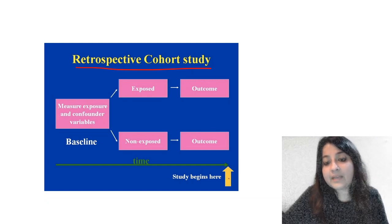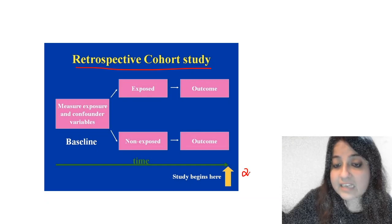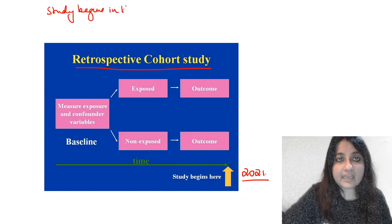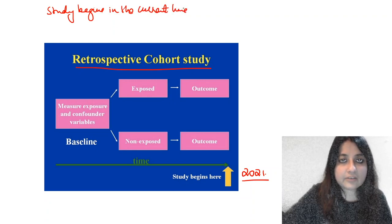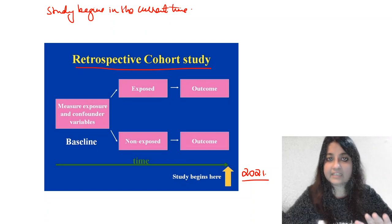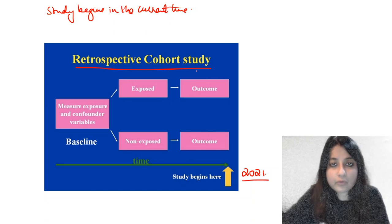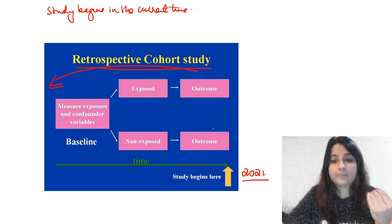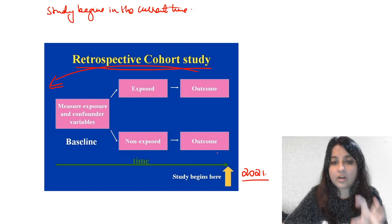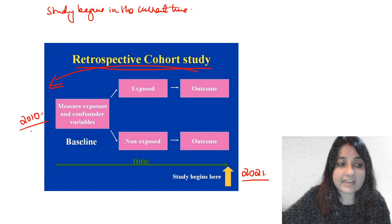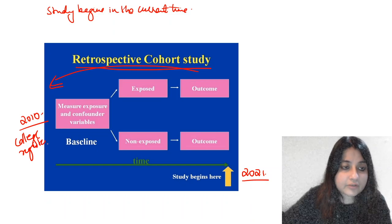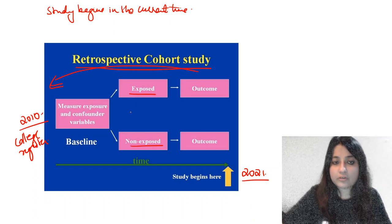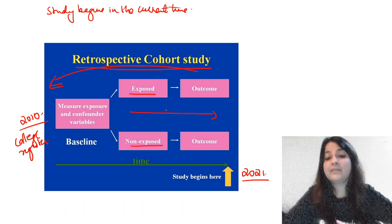What is a retrospective cohort study? The study begins in the current time — in the present. But instead of starting with exposed and non-exposed going forward, I go back in time. For example, suppose I found a group of people enrolled in a medical college in 2010. Using that college register, I divide my participants into exposed and non-exposed — how many smoked and how many did not smoke. Then I determine the outcome at the time the study begins.